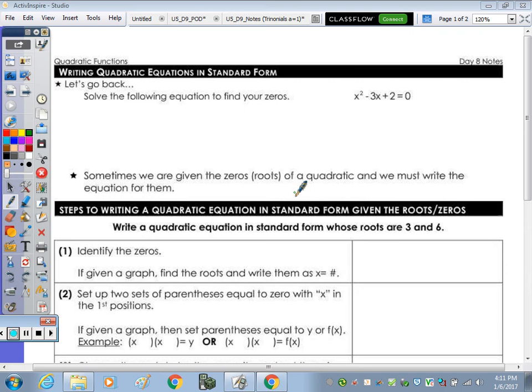Because we're going to be given the zeros and work backwards to write the equation. So in the given equation, to find our zeros, we start by factoring.